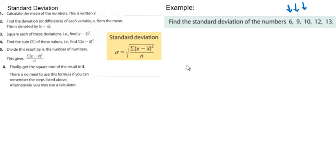So let's start anyway. The first thing we're going to do, and you've got the steps here, is to calculate the mean. So I need to do 6 plus 9 plus 10 plus 12 plus 13. And when we add them all together, we should get 50.